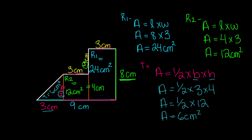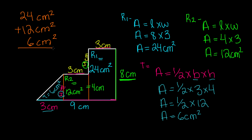Now let's find the total area for this irregular shape by adding all the areas together. We have 24 centimeters squared for rectangle number 1, plus 12 centimeters squared for rectangle number 2, plus 6 centimeters squared for the triangle. Adding these together: 4 plus 2 is 6, 6 plus 6 is 12, carry the 1, 2 plus 1 is 3, 3 plus 1 is 4. So the total area for this irregular shape is 42 centimeters squared.